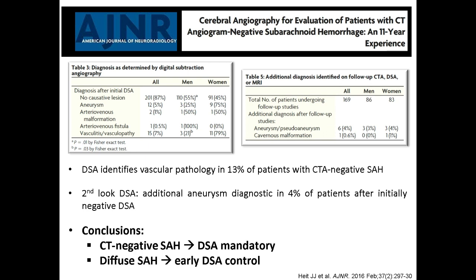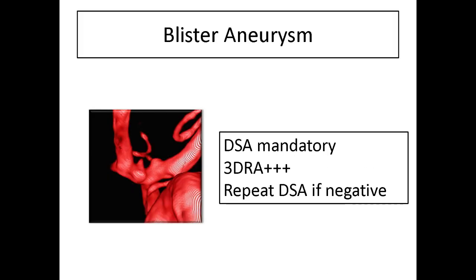We have learned that 2D DSA is sometimes not enough, and that 3D rotational DSA is mandatory because it allows detection of even small aneurysms. Aneurysms less than 3 mm may be missed on 2D DSA. And even with a negative CTA and a negative DSA in case of SAH, you need to repeat DSA to be sure not to miss a very small aneurysm. So in case of blister-like aneurysm, DSA is mandatory with 3D rotational, and don't hesitate to repeat DSA if negative within the first week.